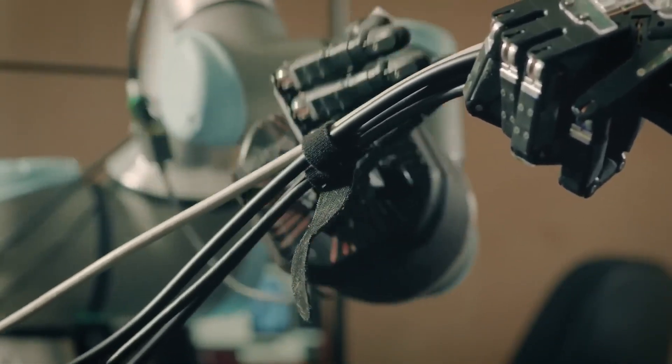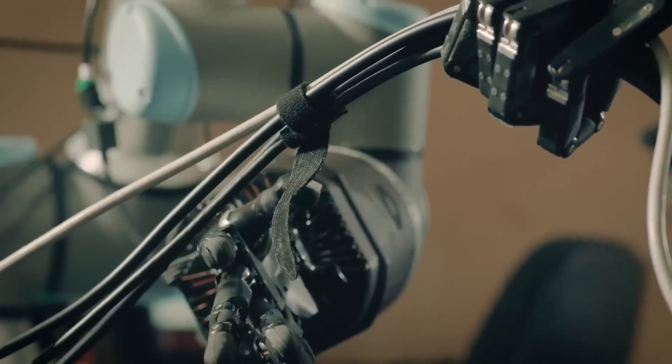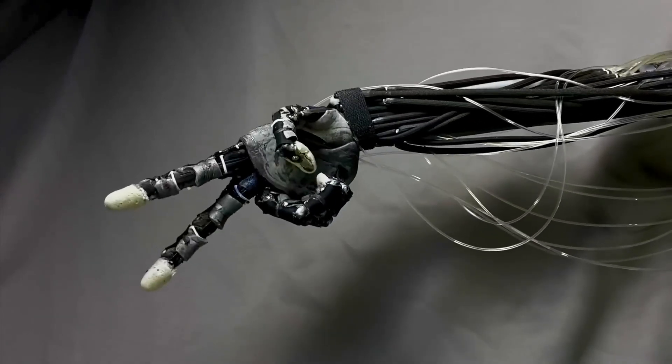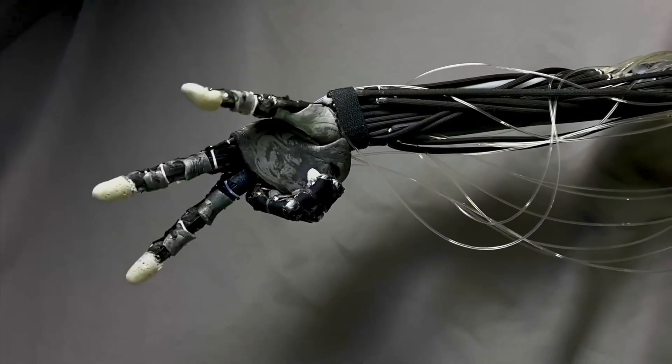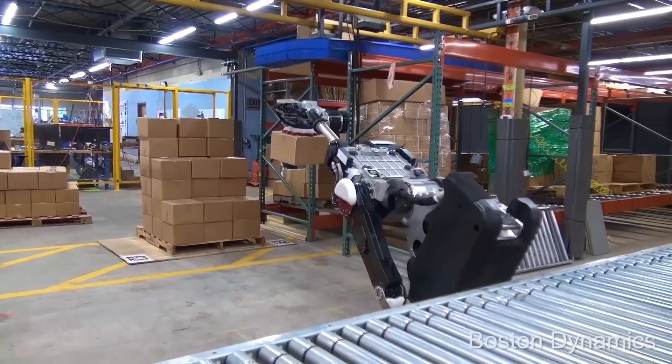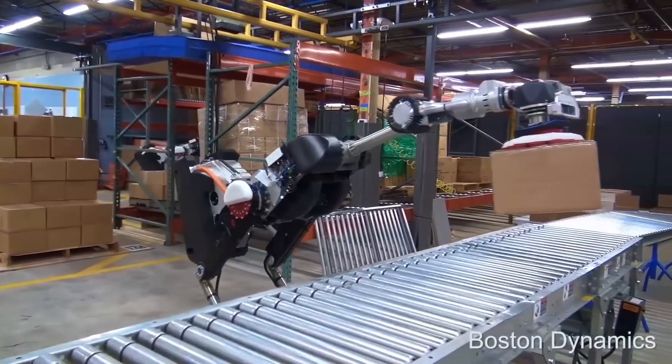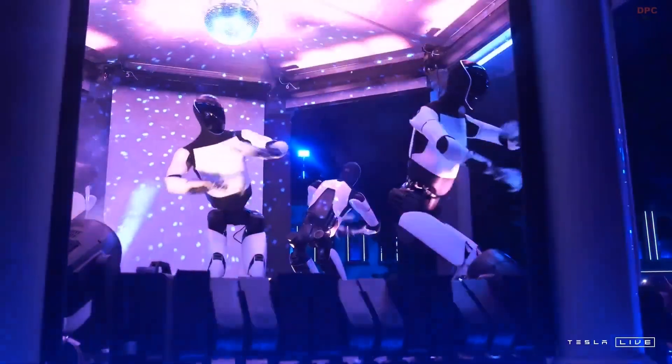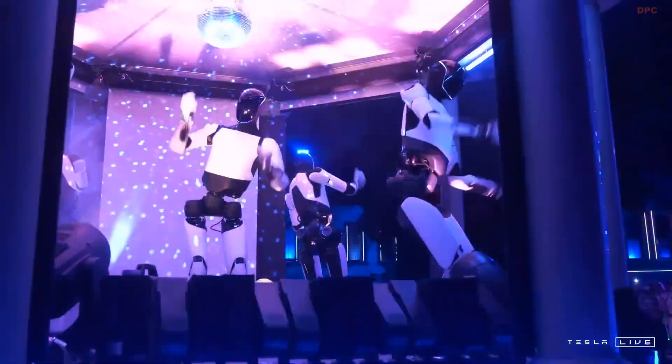Meanwhile, degrees of freedom in robotics imply how many independent ways a robot can move. The more degrees of freedom a robot has, the more adaptable and versatile it becomes in its movements. For instance, a standard industrial robot arm usually has around 6 degrees of freedom, while more advanced humanoid robots might boast anywhere from 30 to 60.